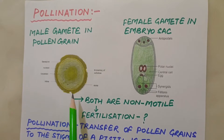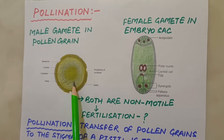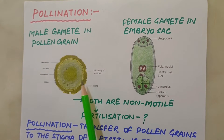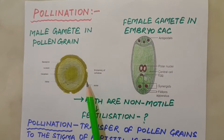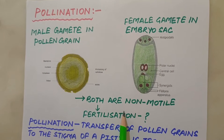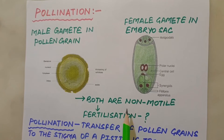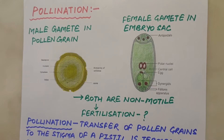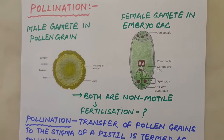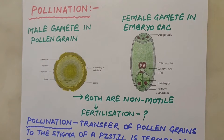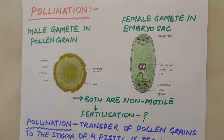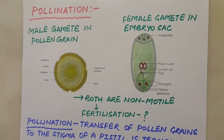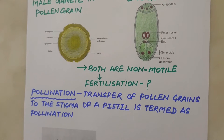We know that male gametes are produced in pollen grain and female gametes are produced in embryo sac. But both these types of gametes are non-motile. They have to be brought together for fertilization. How is this achieved? Pollination is the mechanism to achieve this objective. Transfer of pollen grain shed from the anther to the stigma of a pistil is termed as pollination.